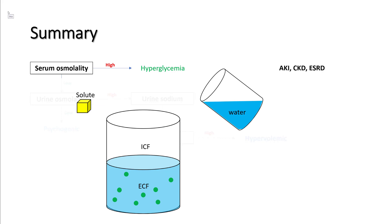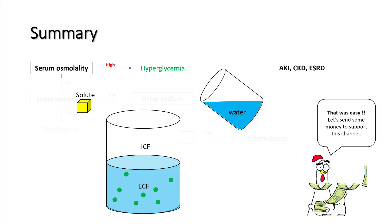If you're dealing with AKI, CKD, or ESRD, your sodium control mechanisms are likely not working, and sodium levels will depend upon the relative amount of solute or water you take in. That's the overall workup for hyponatremia — follow these steps and you should be able to diagnose most hyponatremia problems very easily.